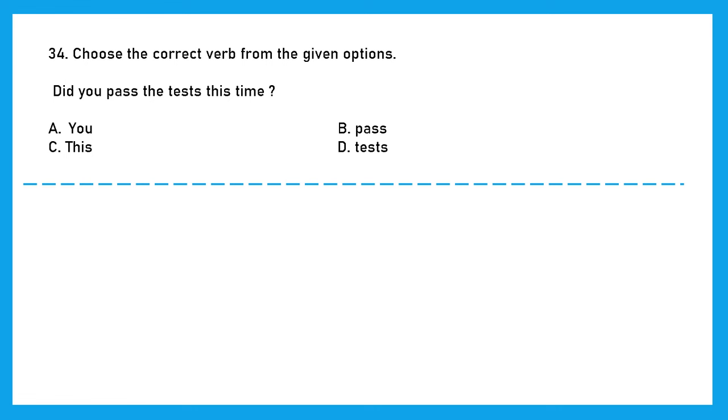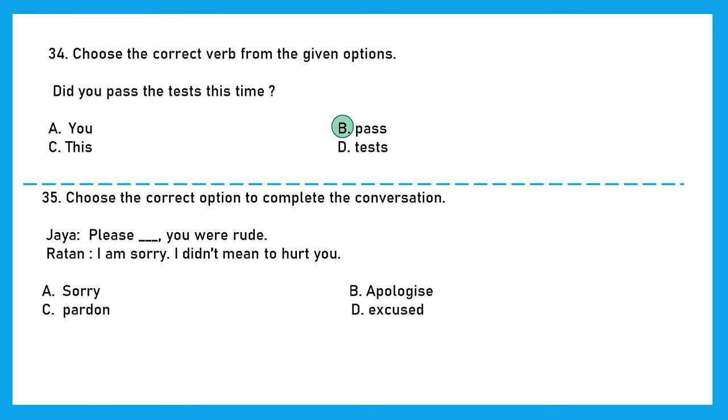Question 35. Choose the correct option to complete the conversation. Jaya: Please blank, you were rude. Ratan: I am sorry, I didn't mean to hurt you. So here what should come? Please sorry you are rude, please apologize you are rude, please pardon, or please excuse. The right answer here should be please apologize you were rude. With this we have successfully completed Class 1 IAO English Olympiad 2023 study question paper.